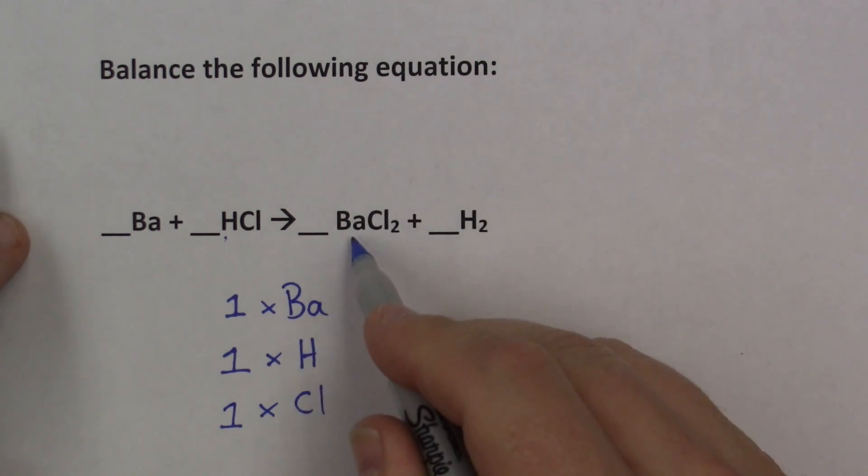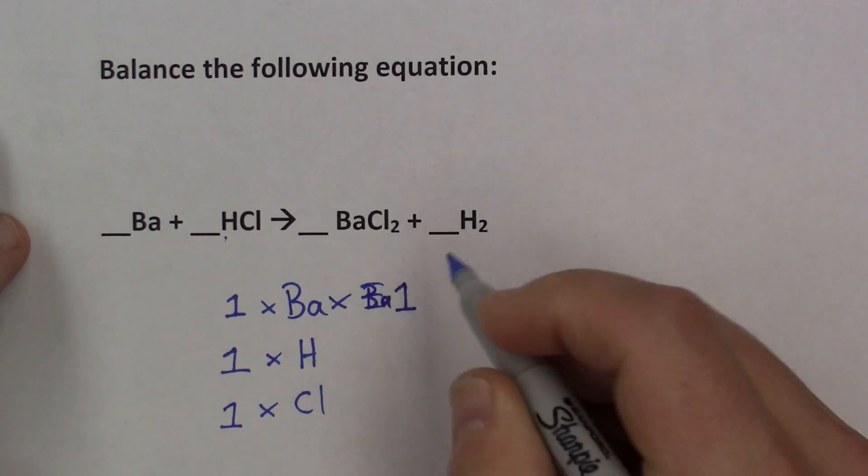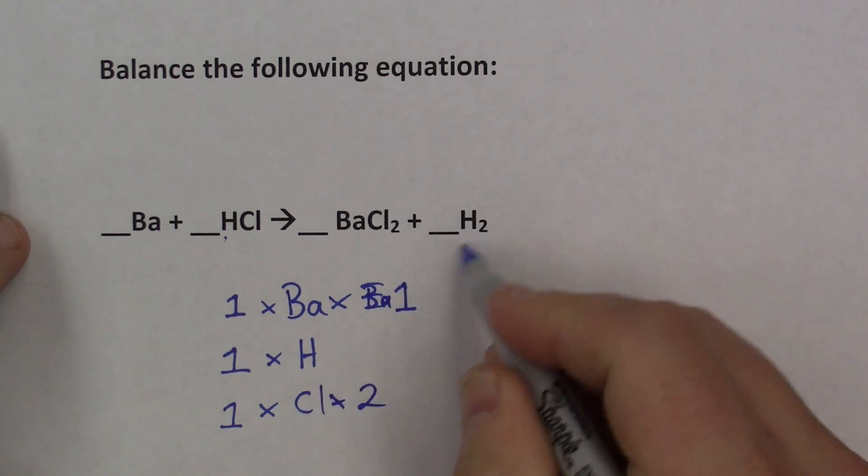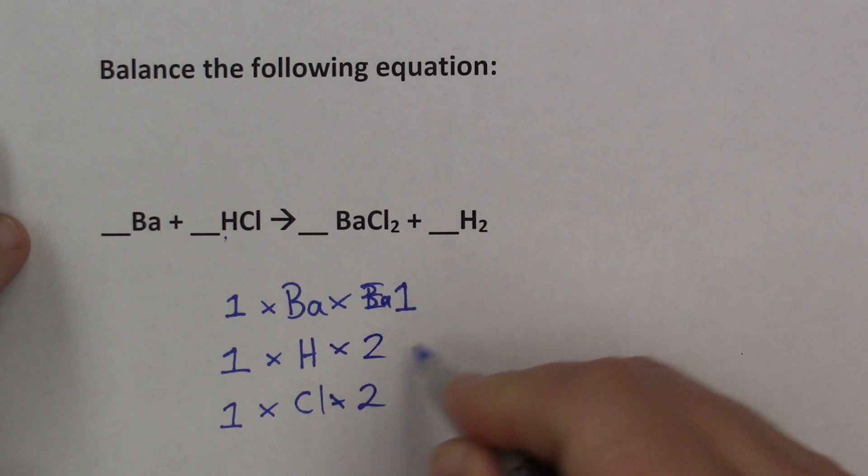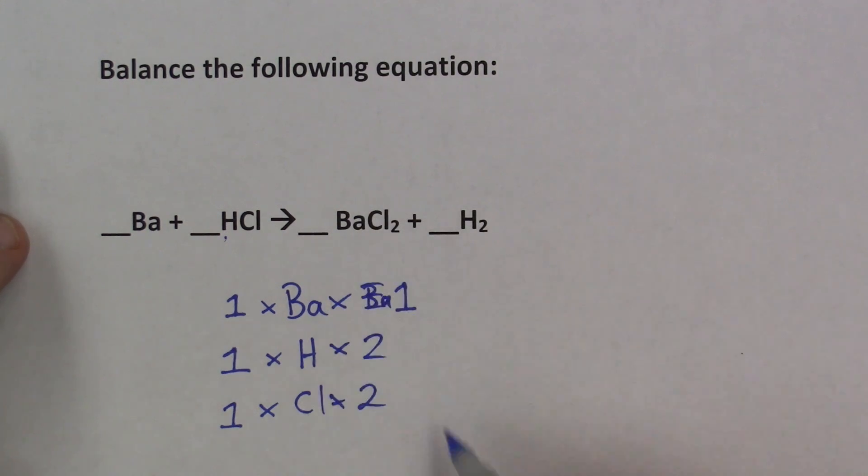On the right-hand side, we have right now, we have 1 barium. We have 2 chlorines, put number 2 there. And we have 2 hydrogens. See, there's number 2 there. It tells me I have 2 hydrogens. The number 2 here tells me I have 2 chlorines. And there's an imaginary 1 to tell me I have 1 barium. So, we have 2 hydrogens on the right, and only 1 hydrogen on the left. 2 chlorines on the right, and only 1 on the left. So this equation is what they call out of balance.